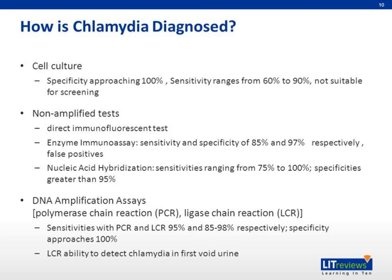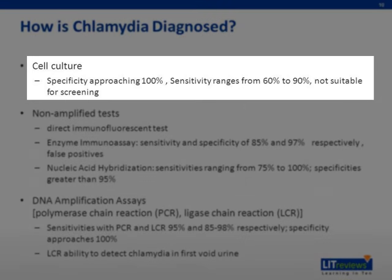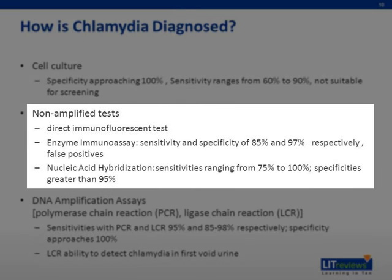For laboratory diagnosis of chlamydia, cell culture is historically the gold standard. It has a variable sensitivity of 50% to 80% but is highly specific, and can be used in legal investigations, though it is generally not suitable for widespread screening. Among non-amplified tests, the direct fluorescent antibody test detects intact bacteria with a fluorescent antibody. The enzyme immunoassay detects bacterial antigen with an enzyme-labeled antibody. A nucleic acid hybridization test detects specific DNA or RNA sequences of Chlamydia trachomatis.